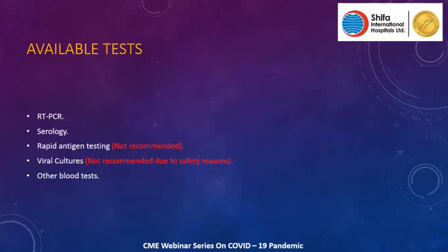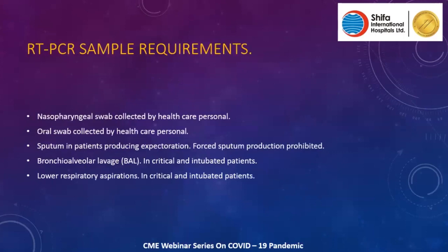Supportive tests include CBC, where the most common finding is lymphopenia; liver function tests showing raised liver enzymes; and acute phase reactants such as ferritin, CRP, and ESR. However, the focus will be on PCR and serology. The sample requirement for PCR is a nasopharyngeal swab, collected by healthcare personnel, with oropharyngeal swab as second choice.